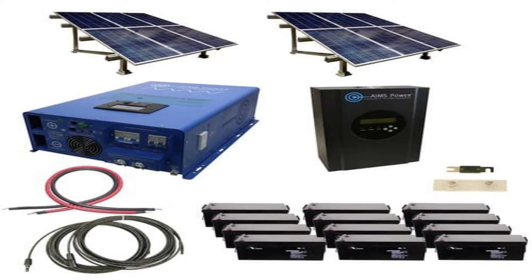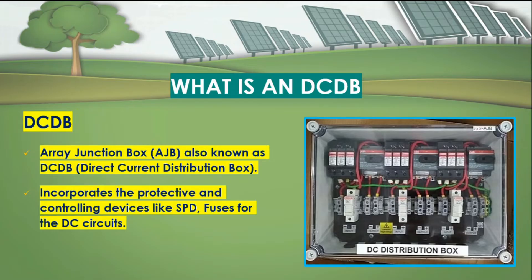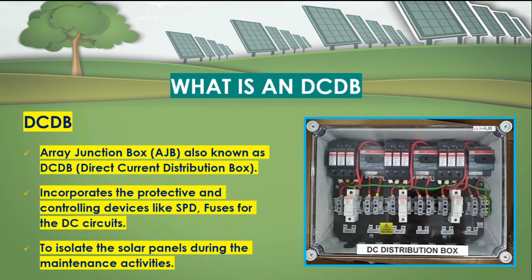The next component is DCDB. DCDB in a solar plant is installed after the solar panels and before the inverters, so they are placed basically between the solar panels and the inverter. They are also known as Array Junction Boxes, with the abbreviation AJB. It has protective devices like SPD, fuses, and MCB. SPD protects against any kind of surges in the electricity line, while fuse and MCB protect against short circuits. DCDB is also used to isolate the solar panels during maintenance activities.